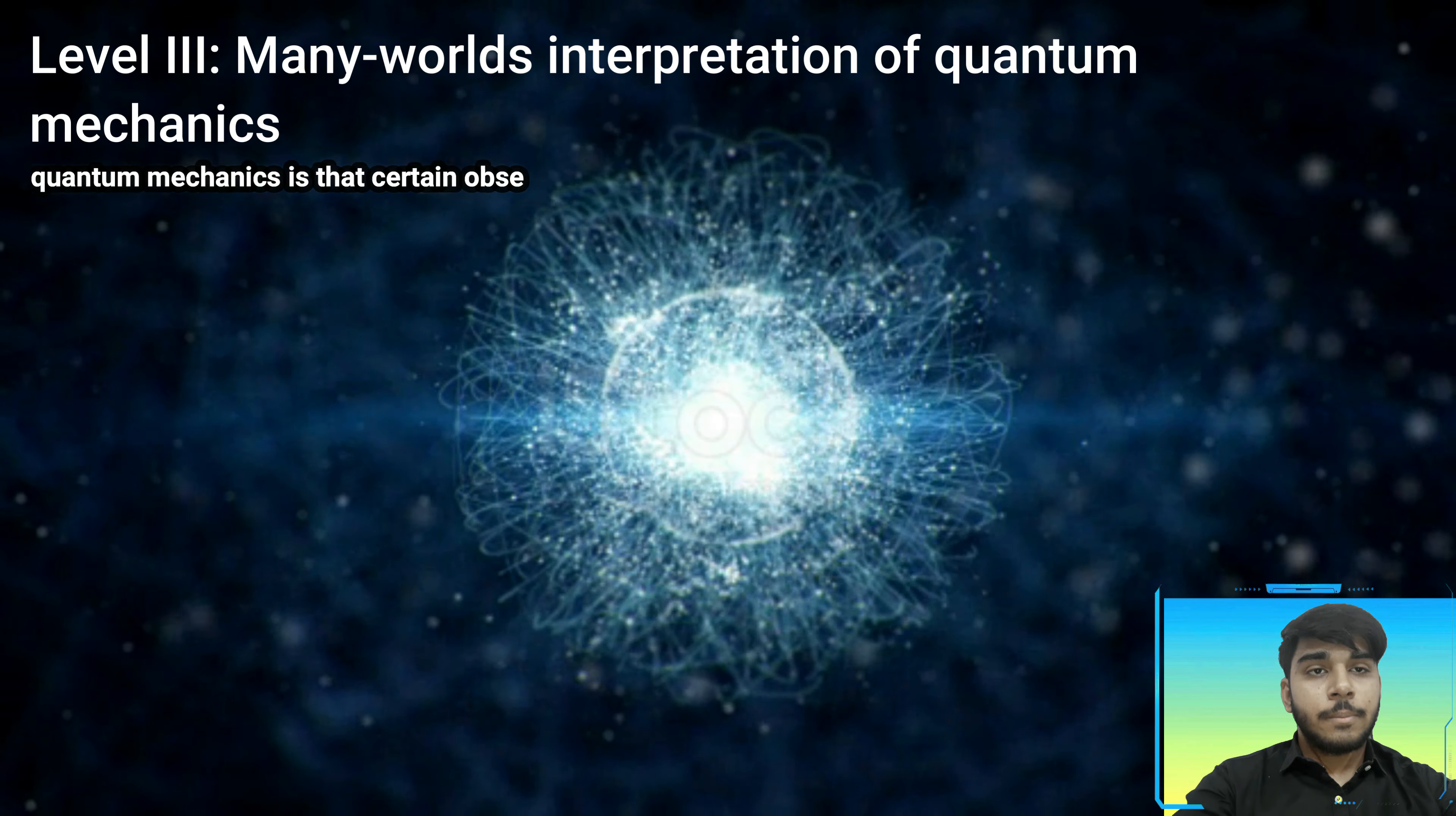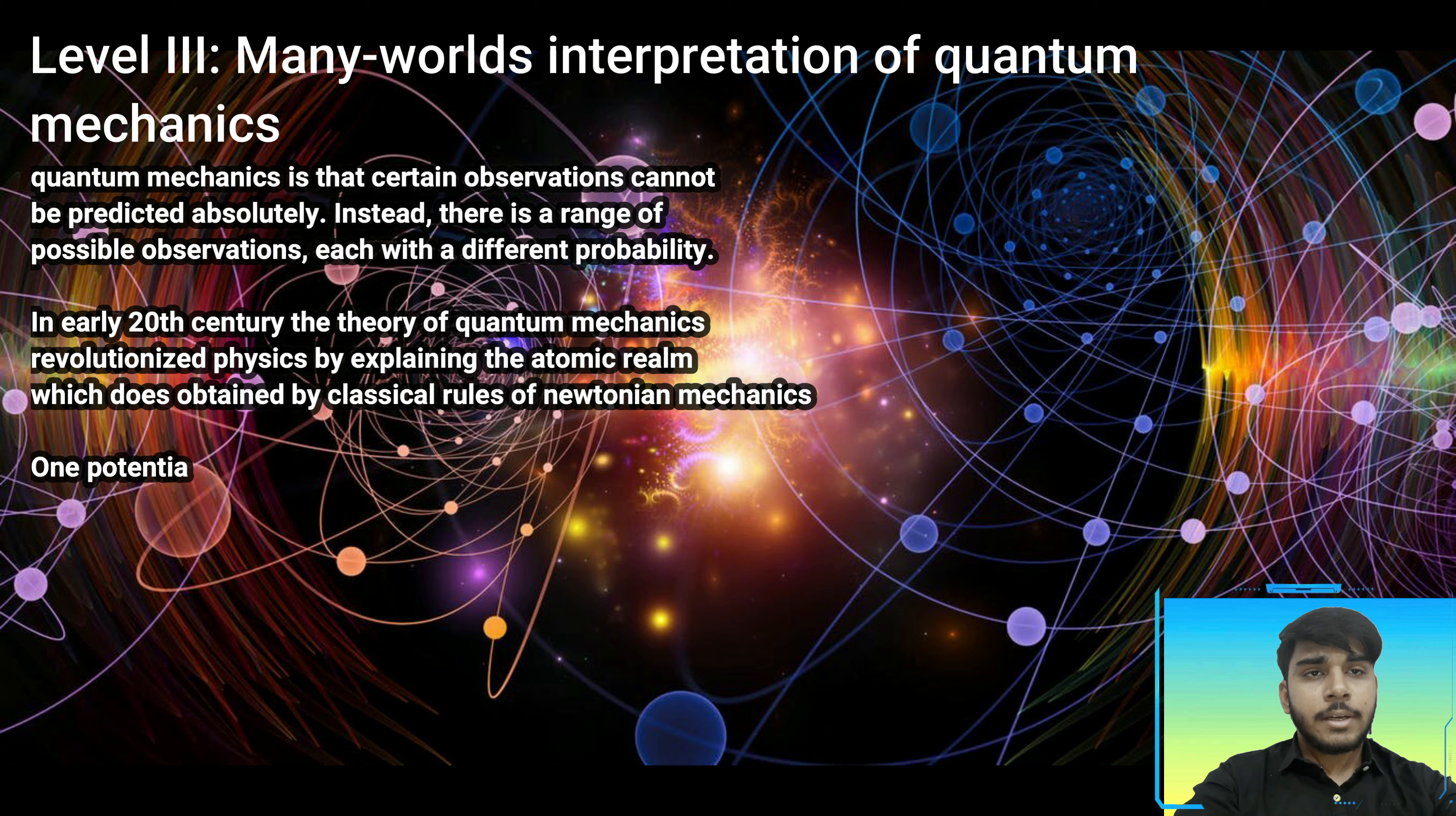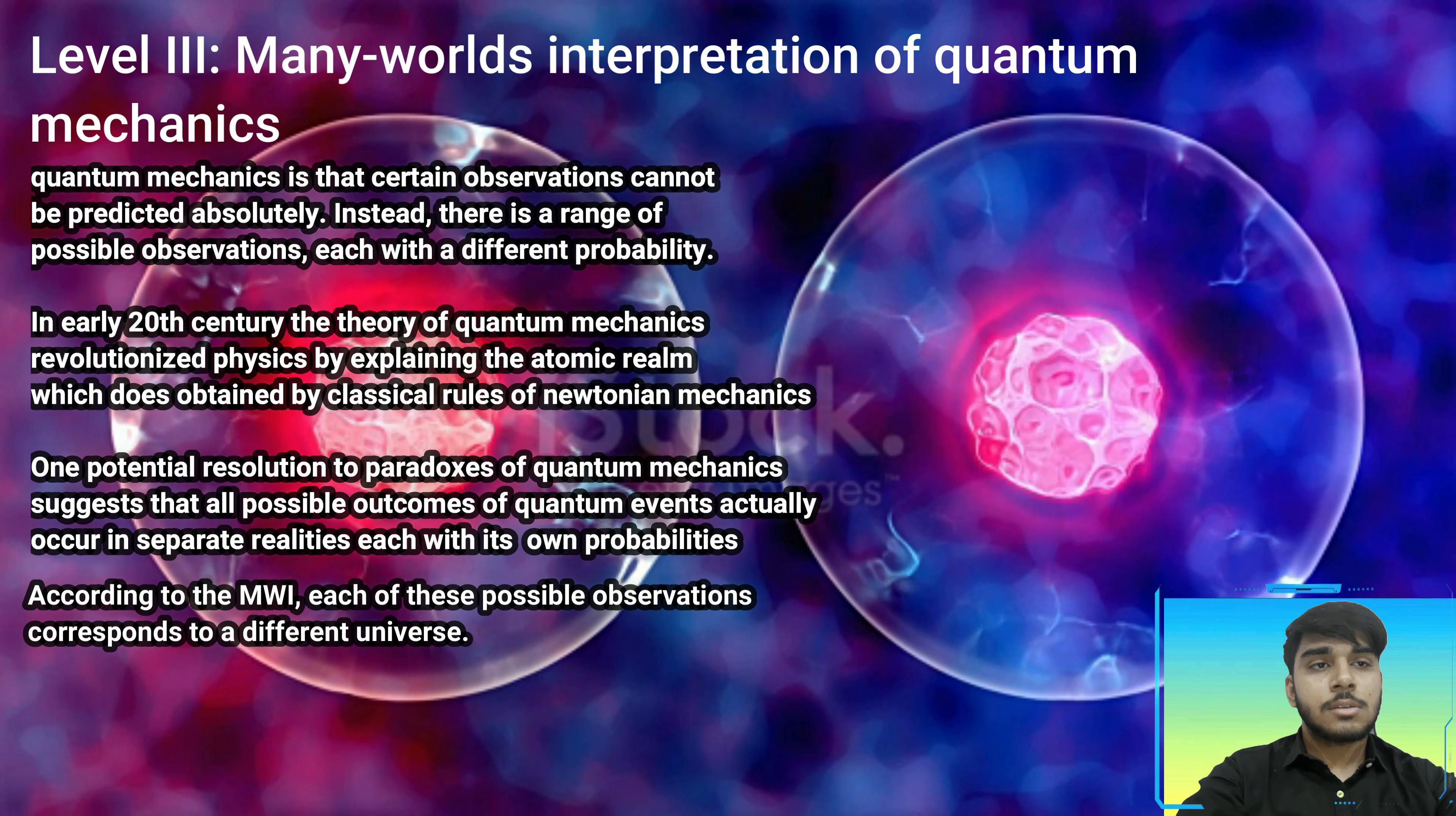Level Three: Many Worlds Interpretation of quantum mechanics. Quantum mechanics is such that certain observations cannot be predicted absolutely. Instead, there is a range of possible observations, each with different probabilities. In the early 20th century, quantum mechanics revolutionized physics for explaining the atomic realm, which does not obey the classical rules of Newtonian mechanics.